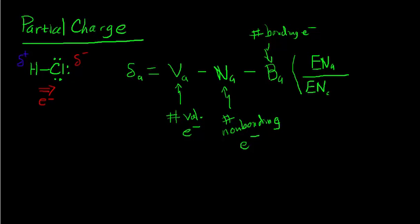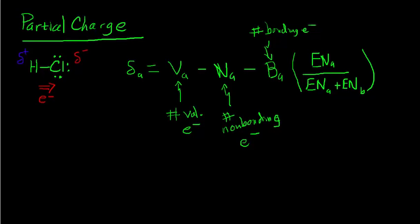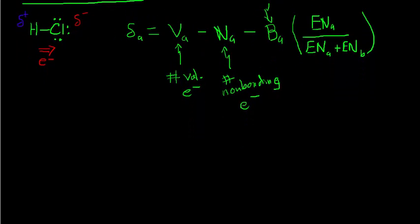That's the electronegativity of atom A plus the electronegativity of atom B, to which it is bonded. So to get an idea of how to work with this formula, let's apply it to HCl. If we're calculating the partial negative charge on Chlorine, Chlorine has seven valence electrons.